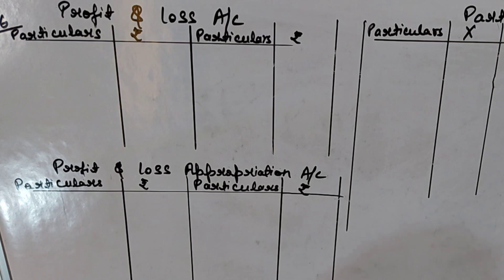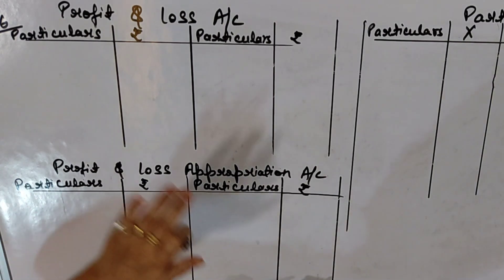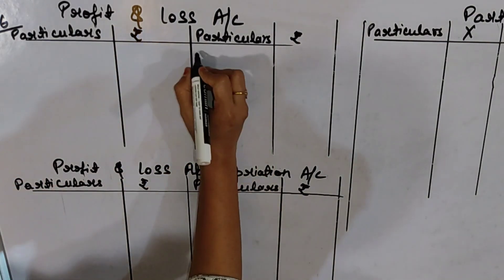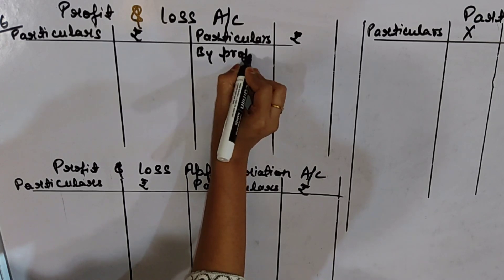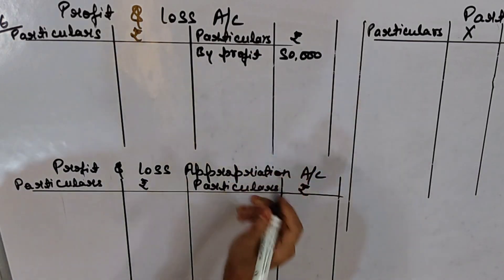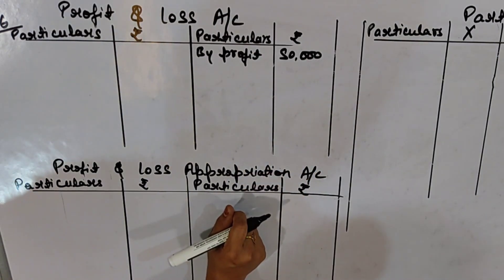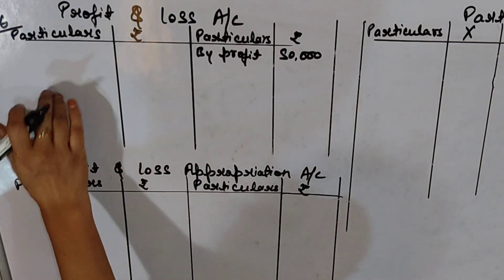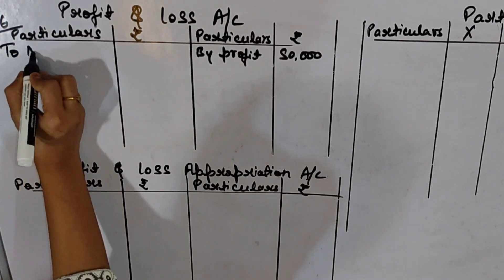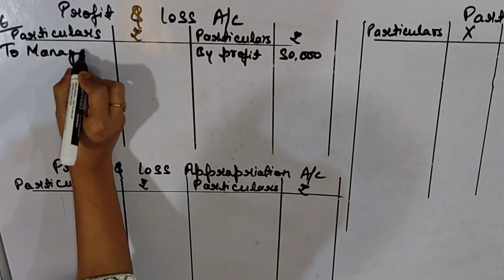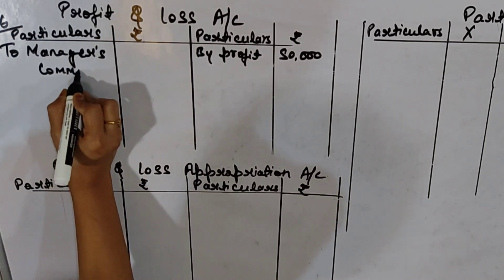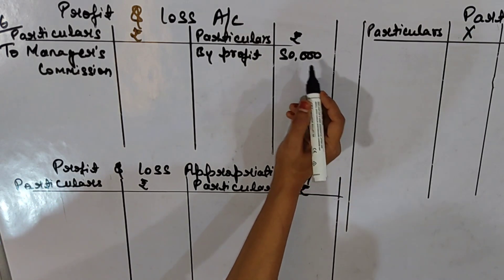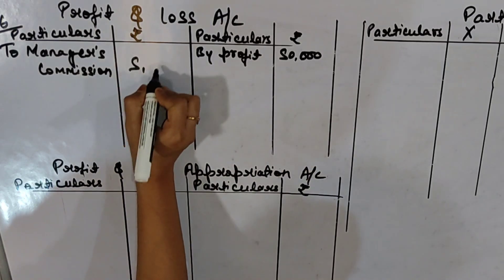Let's start the solution. The profit given in the question is 50,000. Its entry we will not make in the Appropriation Account directly — we will make it in the Profit and Loss Account, because manager's commission is given and it is calculated on profit. So we write: By Profit 50,000. Manager's commission — is it income or expense for the firm? The firm is paying commission to the manager, so it is an expense. Expenses are entered on the debit side of the Profit and Loss Account. So here we write: To Manager's Commission. Calculate 10% of 50,000: 50,000 × 10 ÷ 100 = 5,000. So we write 5,000.